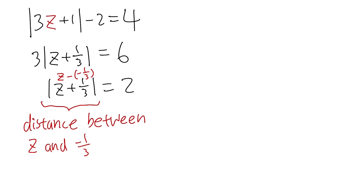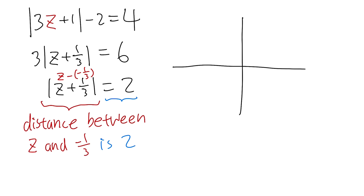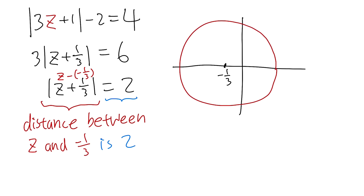We want the distance between z — a complex number — and negative one-third — a real number — to equal 2. What are the possibilities? The answer is a circle. Here is negative one-third, and the distance is just the radius of the circle, which is 2. This circle represents the set of all complex solutions.